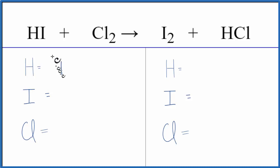We have one hydrogen, one iodine, and two chlorine atoms. On the product side, we have one hydrogen, two iodine atoms, and one chlorine.